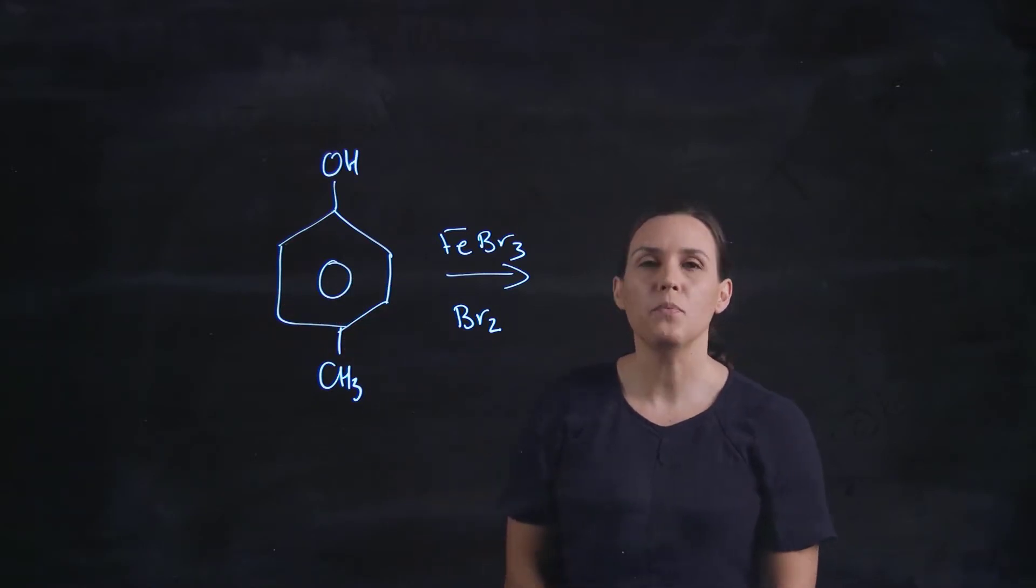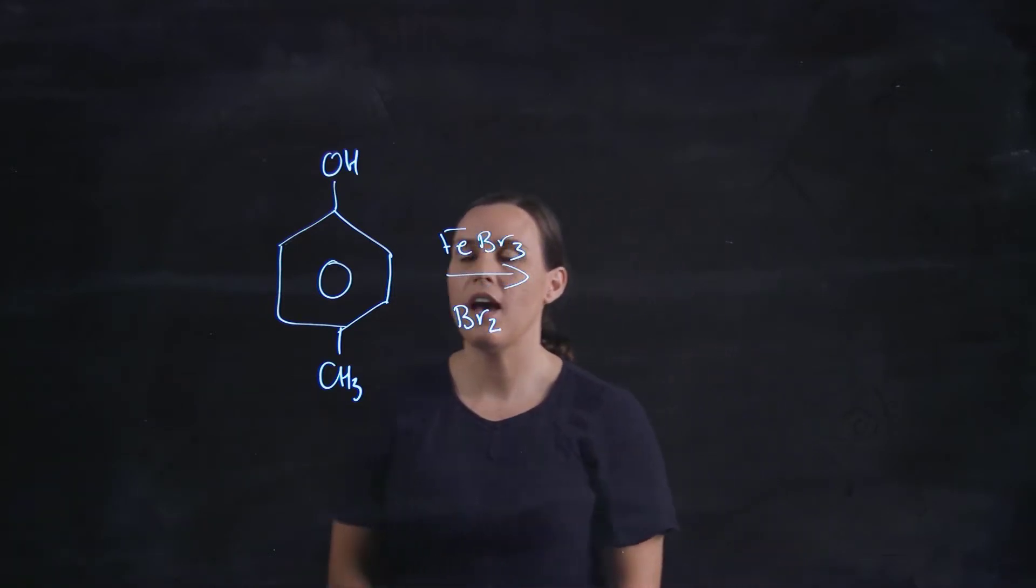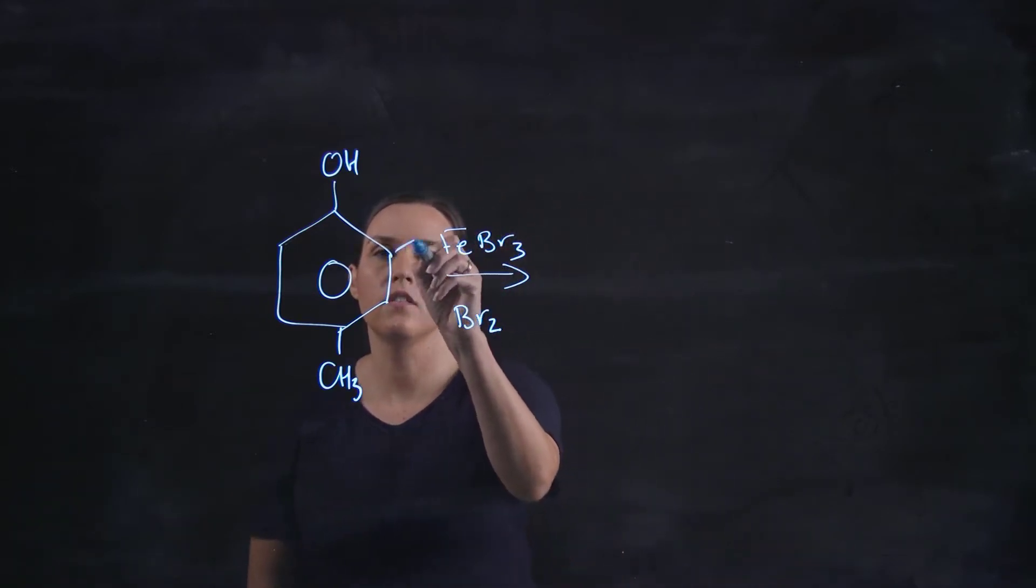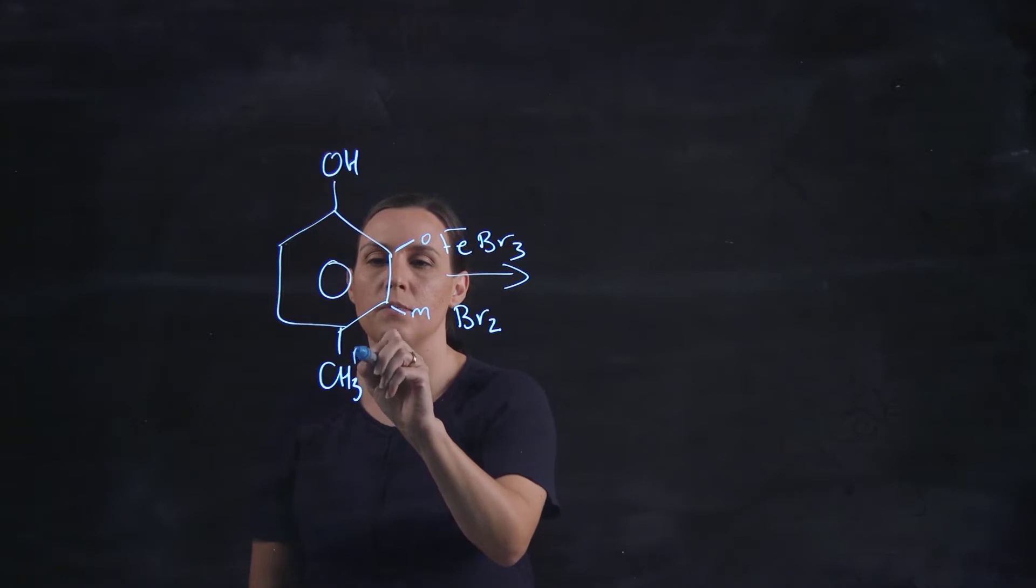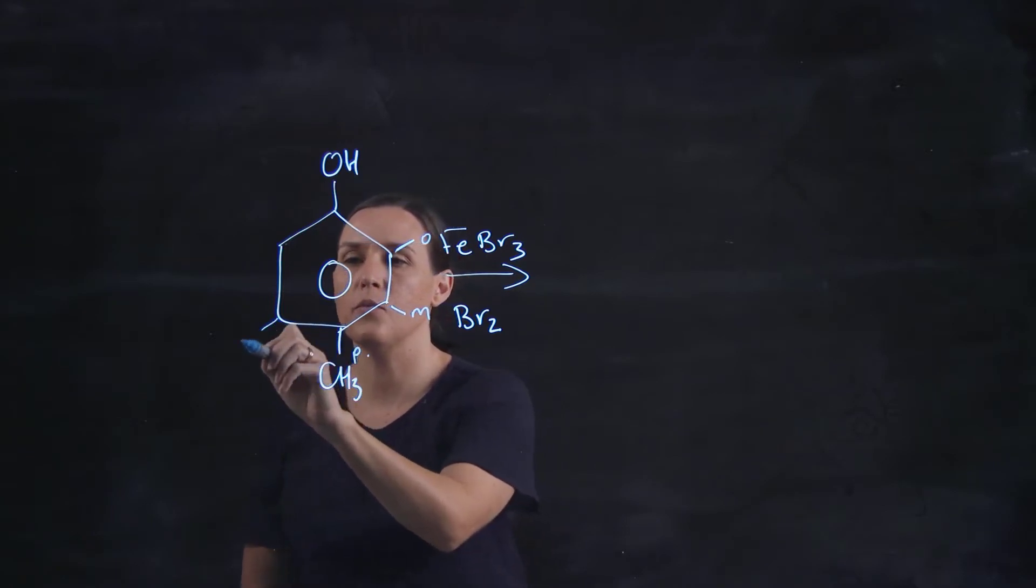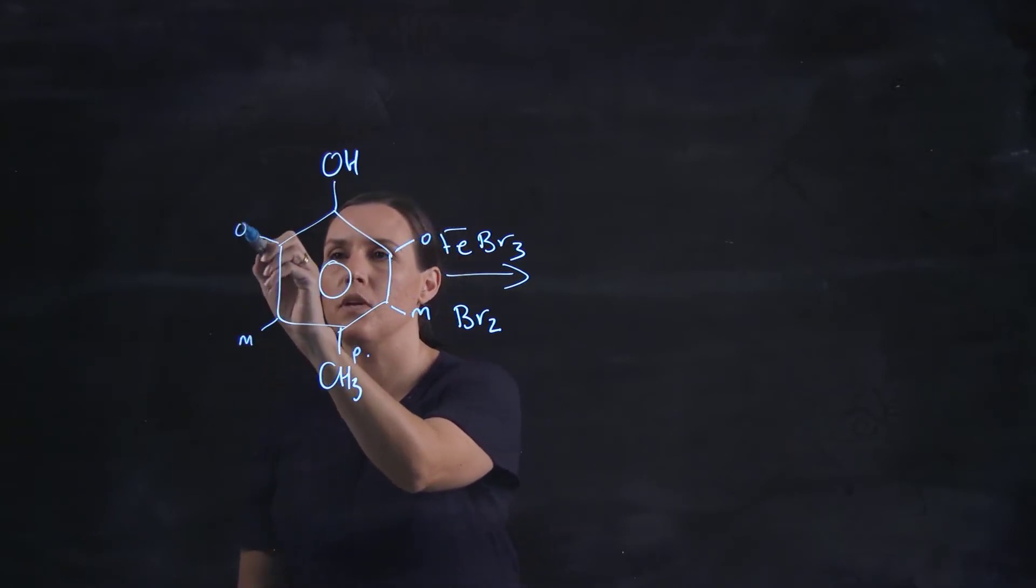So we need to think what positions are these groups going to attach. So remember we have our ortho, we have our meta, and in this position we've got our para. This one will be a meta and this one would be an ortho.